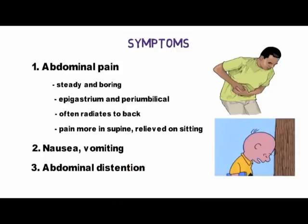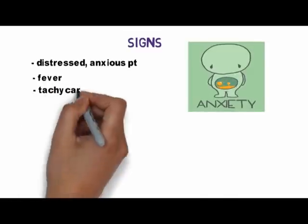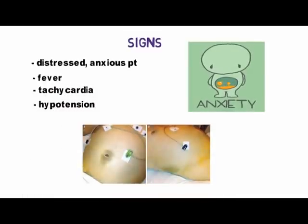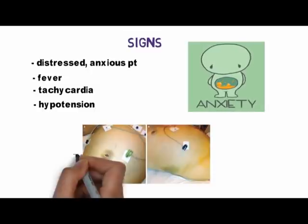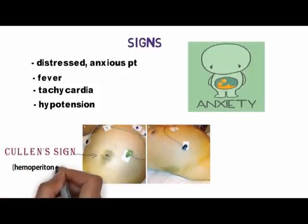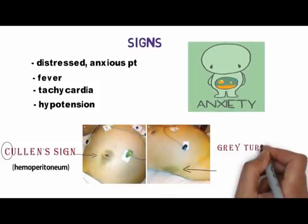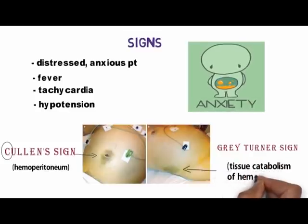Other symptoms include nausea, vomiting, and abdominal distension due to gastric and intestinal hypomotility. As for signs, the patient usually appears distressed and anxious, and there can be fever, tachycardia, and hypotension. There are two unique signs of pancreatitis. On the left side you can see bluish discoloration around the umbilicus — this is called Cullen's sign, which occurs as a result of hemoperitoneum. You can remember it by the shape of the umbilicus resembling the letter C. The discoloration of flanks is called Grey Turner's sign, which occurs due to tissue catabolism of hemoglobin. Since 'Turner' has 'turn' in its name, remember that we take turns on our sides or flanks while lying down — so discoloration occurs on the flanks.